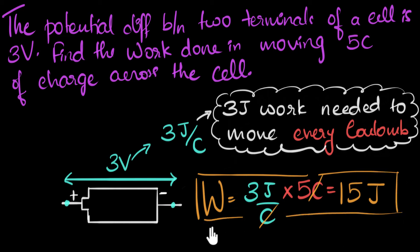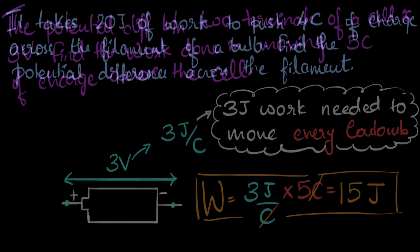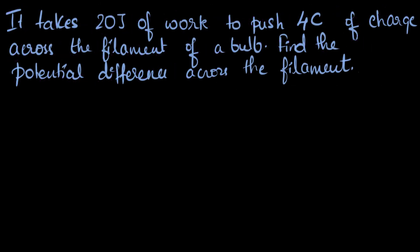Notice that if we understand what voltage, or potential difference, means — if we understand the meaning of volts — we don't have to remember any formula. We can just logically solve problems like this. Let's try another one: it takes 20 joules of work to push four coulombs of charge across the filament of a bulb.